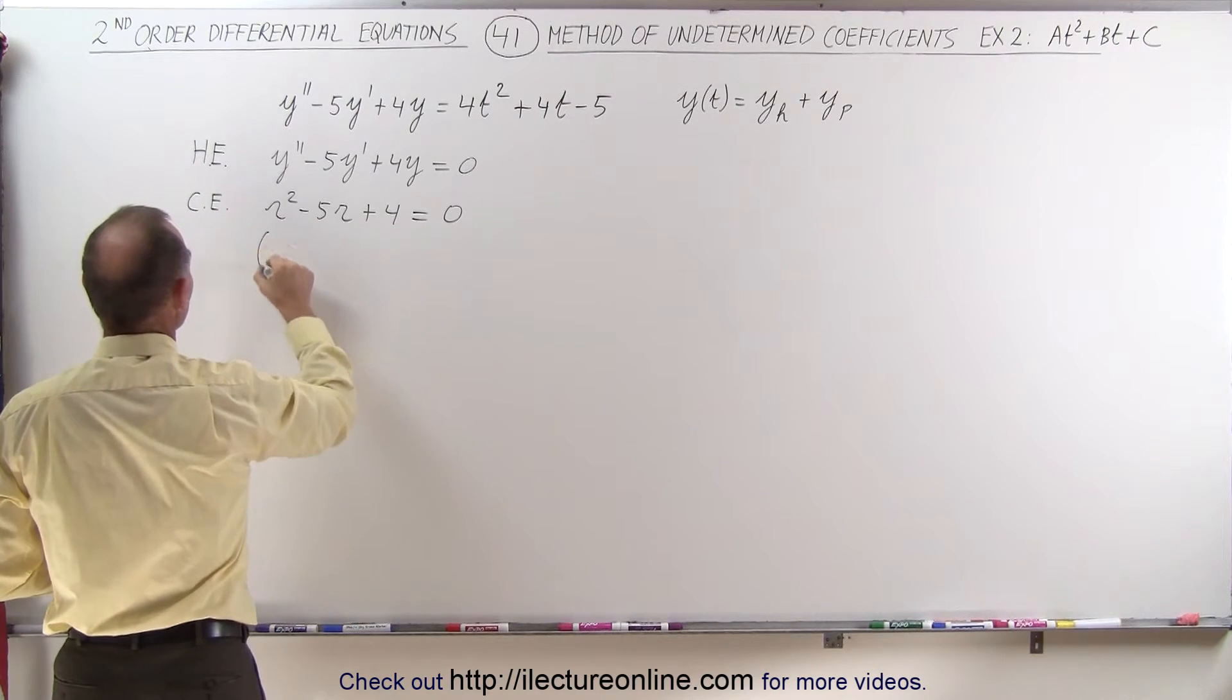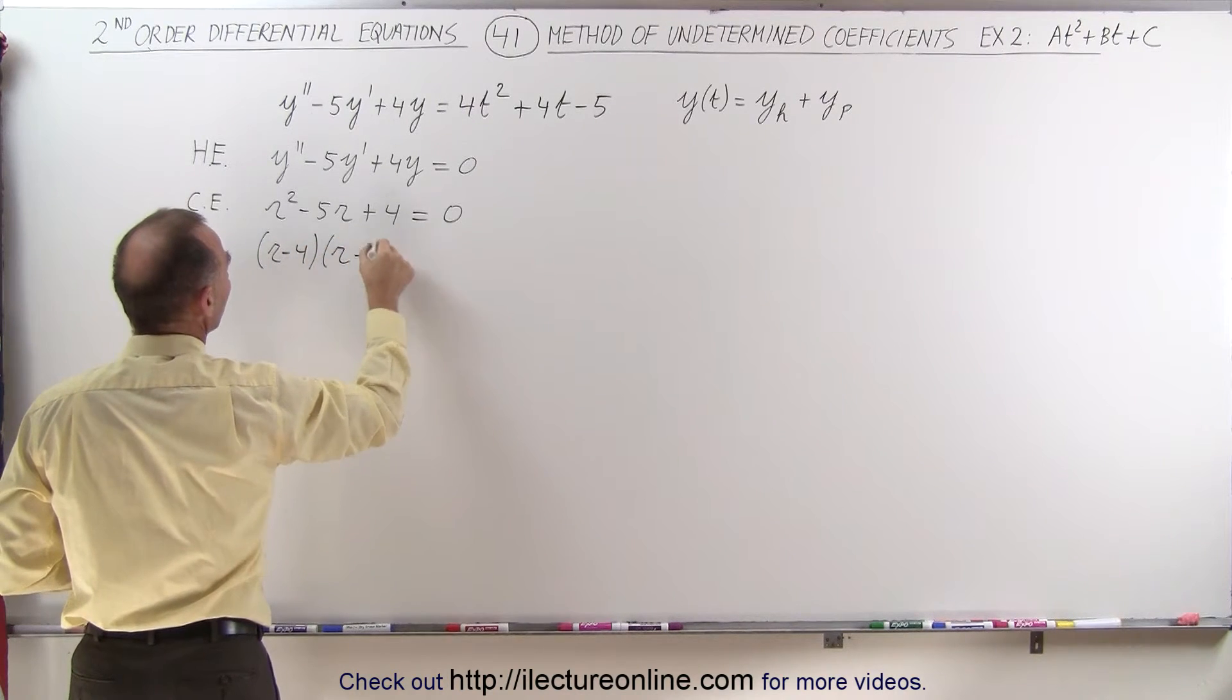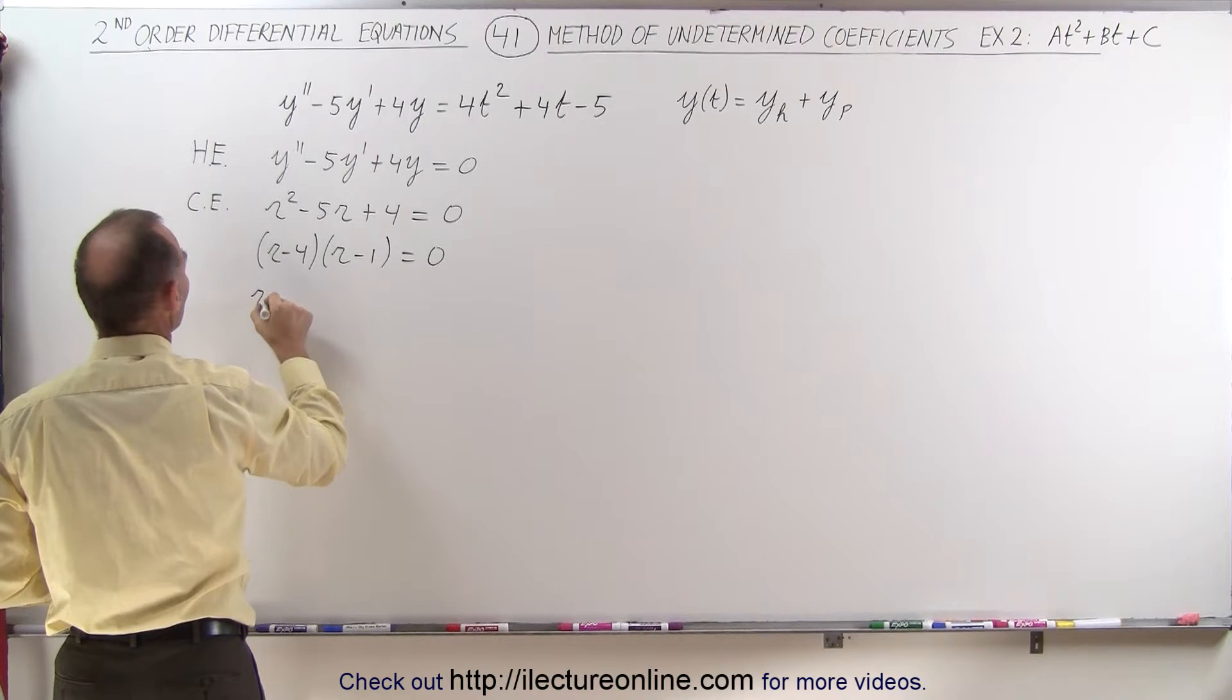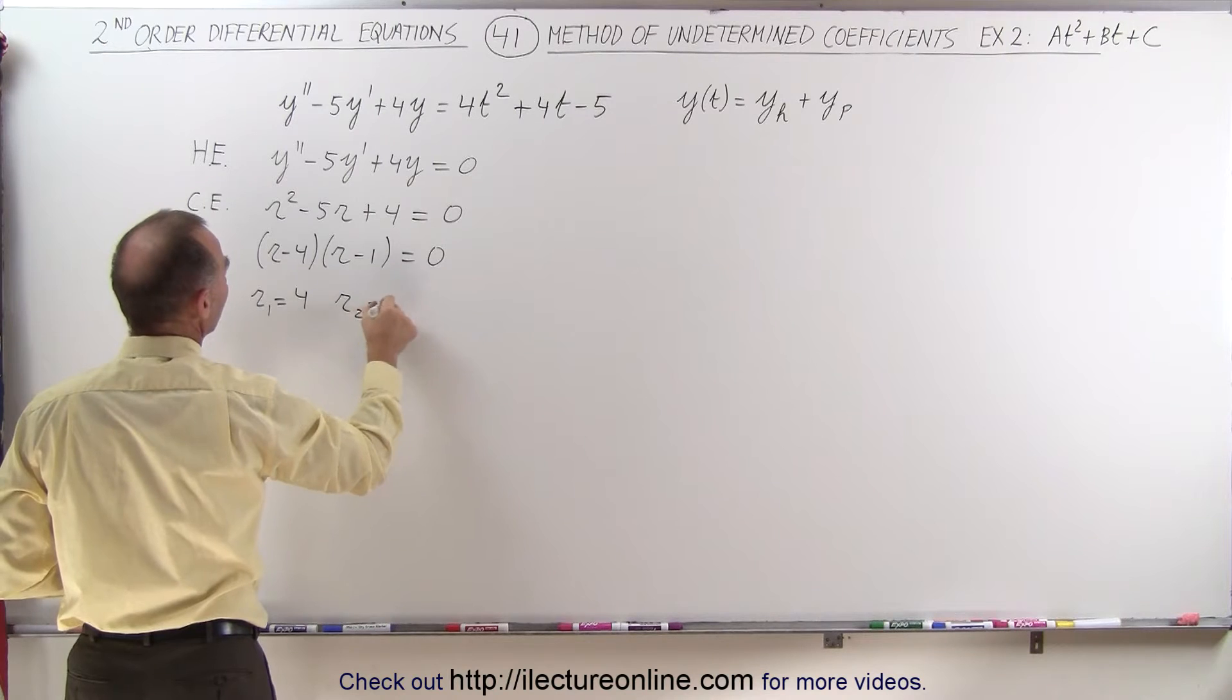So again, this can be factored. r minus 4 times r minus 1 is equal to 0, which means the two roots are r1 which is 4 and the second root r2 which is equal to 1.